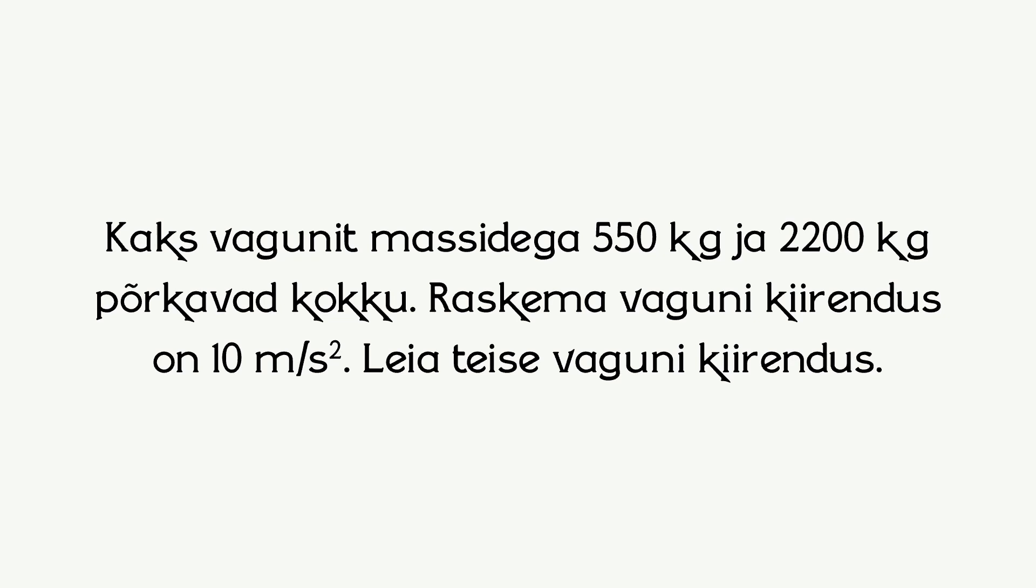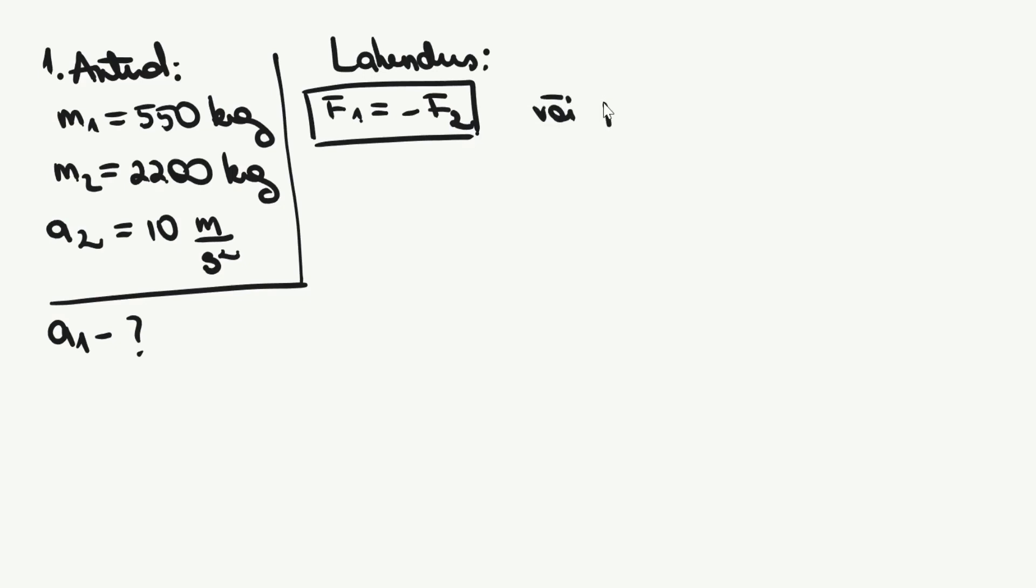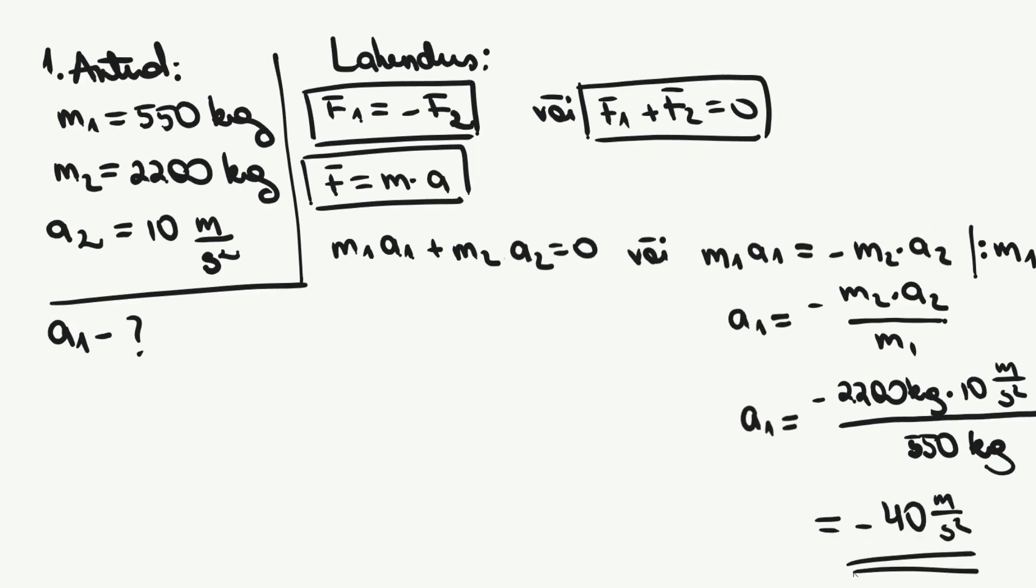Ära arvesta õhutakistust ja hõõrdejõudu. Pane video pausile ning lahenda ülesanne iseseisvalt. Seejärel vaata videot lahenduskäigu kinnistamiseks edasi ja kontrolli oma vastust. Kõigepealt kirjutame välja andmed. Newtoni kolmas seadus ütleb, et igale jõule mõjub sama suur vastassuunaline jõud. Seda saame näidata kujul F1 võrdub miinus F2. Kasutame äsja õpitud Newtoni teise seaduse valemit F võrdub M korda A ka siin. Asendame Newtoni teise seaduse jõu valemi kolmanda seaduse valemisse ja avaldame saadud avaldisest teise vaguni kiirenduse. Asendame andmed seatud avaldisse ning arvutame. Ja saame vastuse, et teise vaguni kiirendus on 40 meetrit sekund ruudus. Siin puhul näitab miinusmärk, et teine vagun liigub vastassuunas, ehk esimesele vagunile vastu.